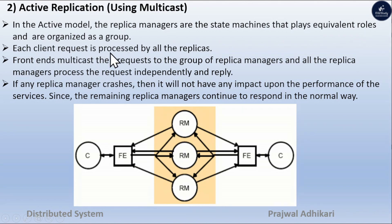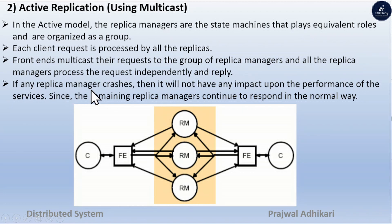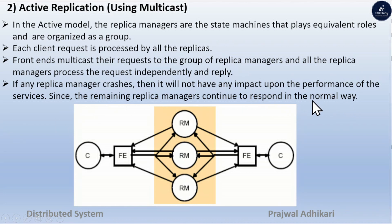Each client request is processed by all replicas. The front end multicasts the request to the group of replica managers, and all replica managers process the request independently and reply. If any replica manager crashes, it will not have any impact on the performance of the service, since the other remaining replica managers continue to respond normally.